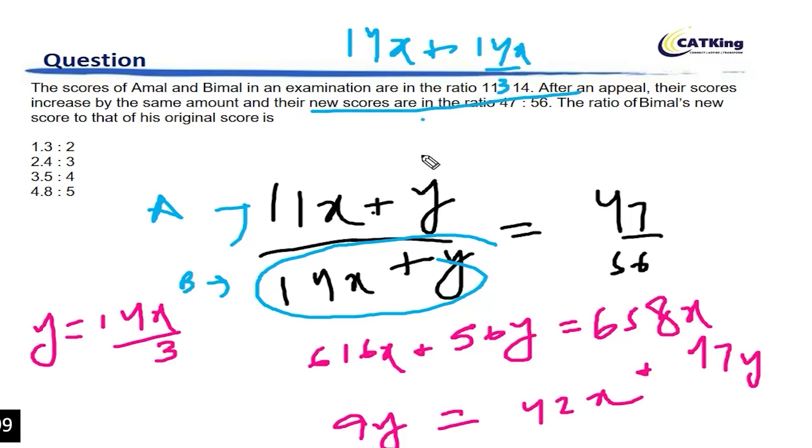With respect to the original score, which was 14x, right? So this 14x cancels out. This becomes 4 by 3. So the ratio here is 4 by 3.